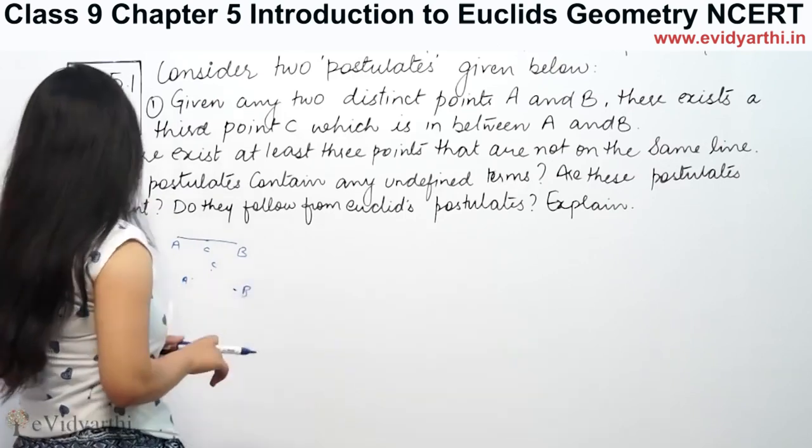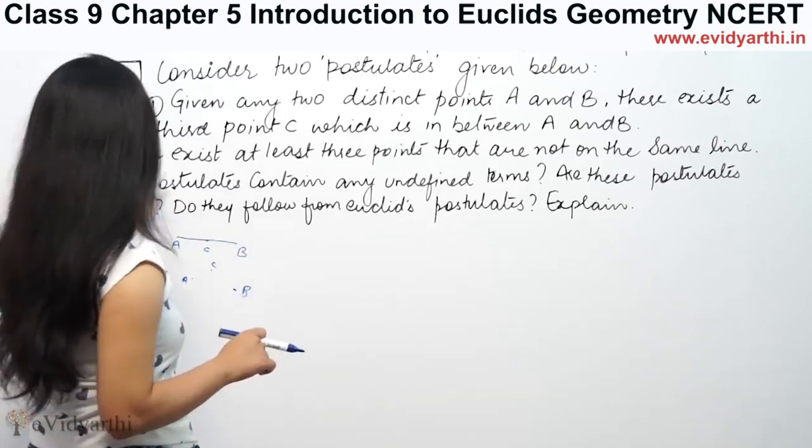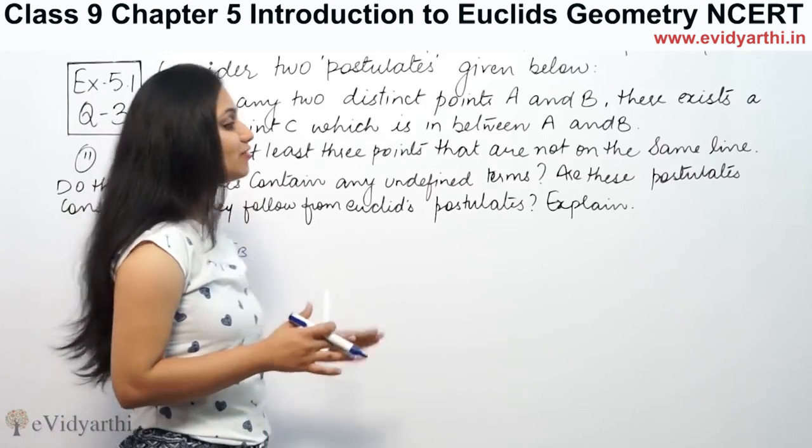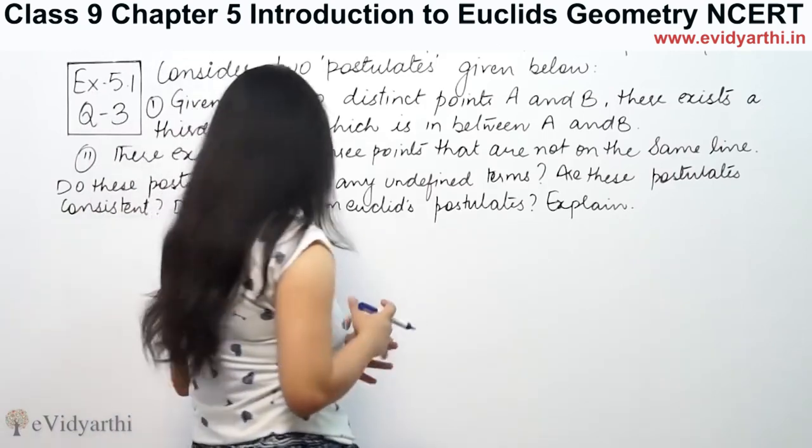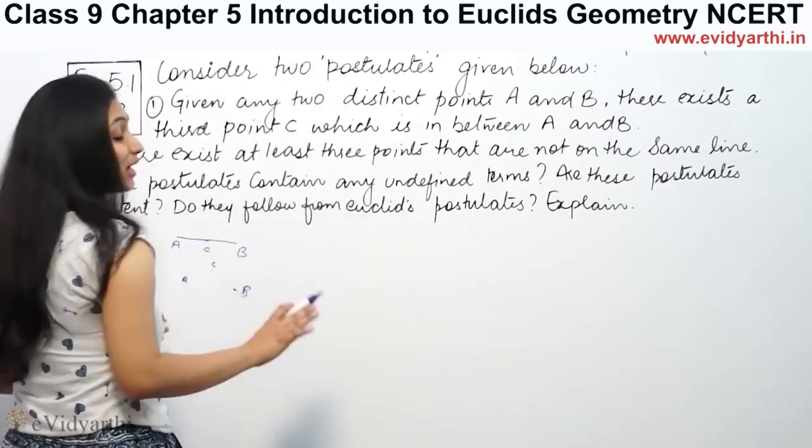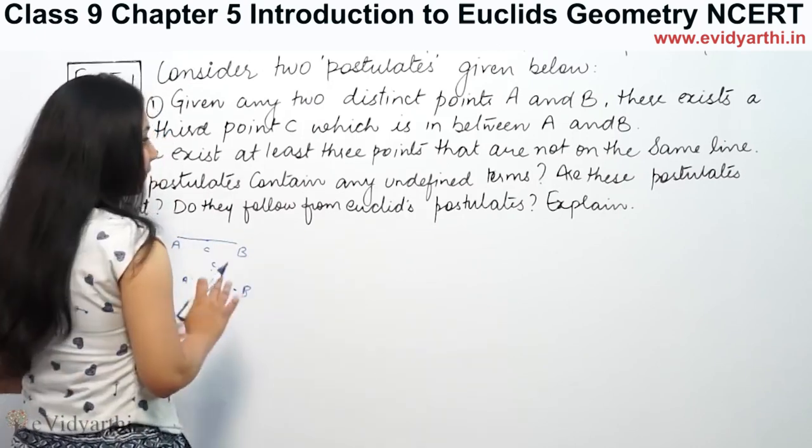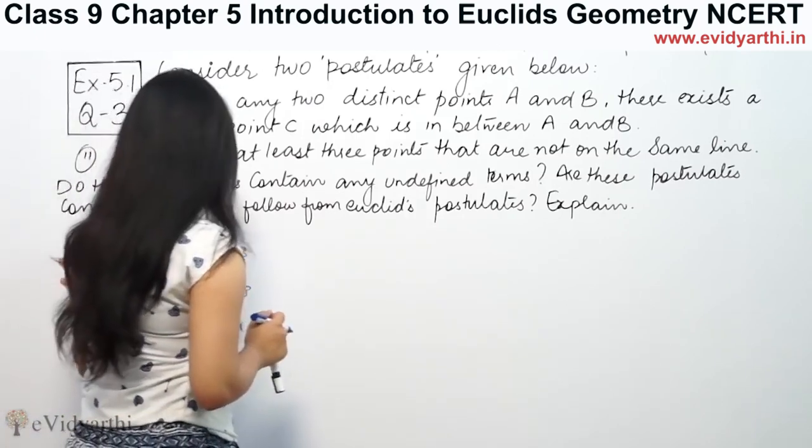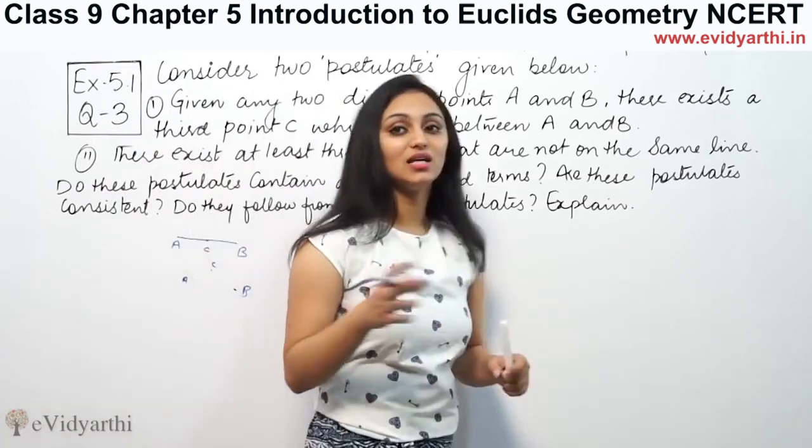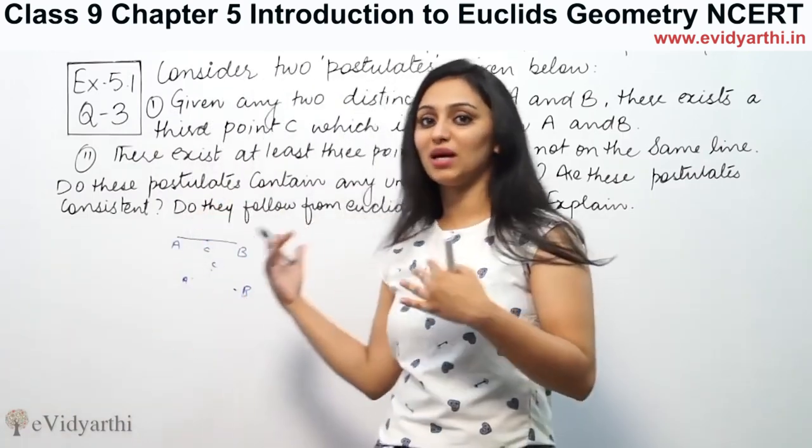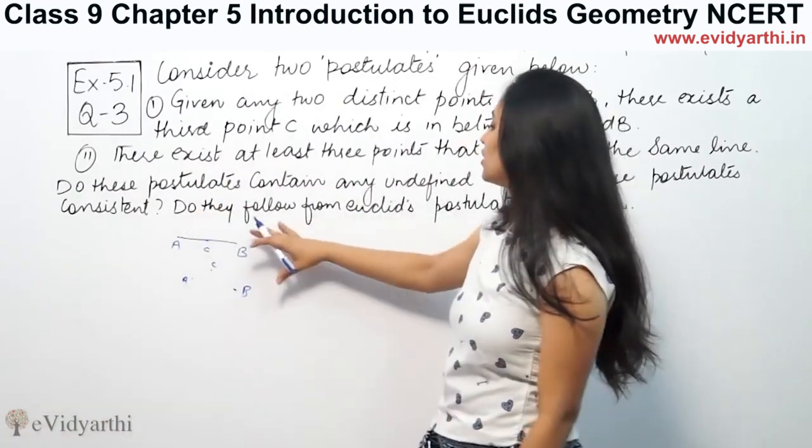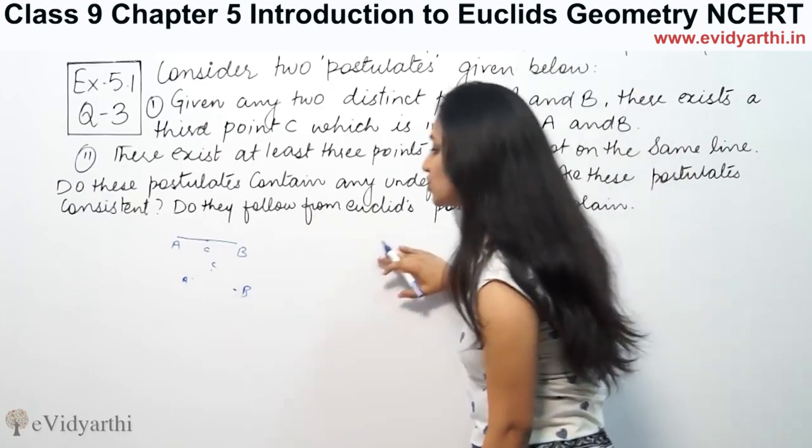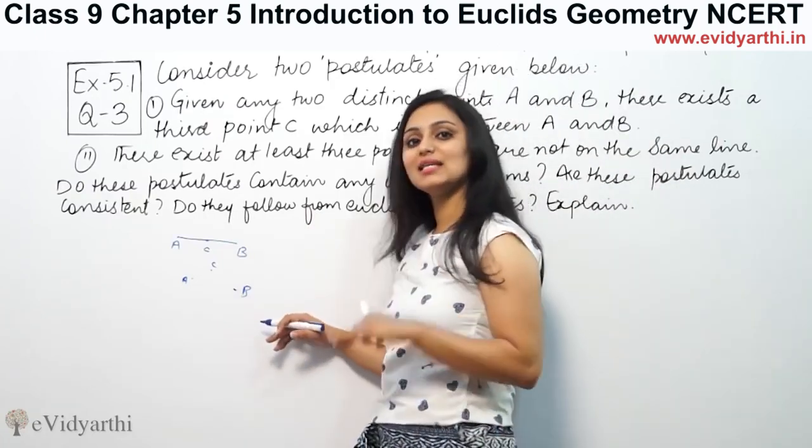First, do these postulates contain any undefined terms? Yes, because I have not seen the line and points. Are these postulates consistent? They are not consistent because they have two different solutions. Do they follow from Euclid's postulates? Euclid's postulates is not Euclid's example.